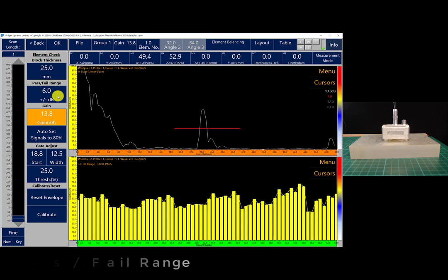Step two would be to set the pass-fail range. The pass-fail range is the maximum signal variation allowed from each element. For the calibration to pass the element check, each element must be within the pass-fail range. You are able to adjust the range accordingly to your standards. We have set the range to be plus or minus 6 dB.